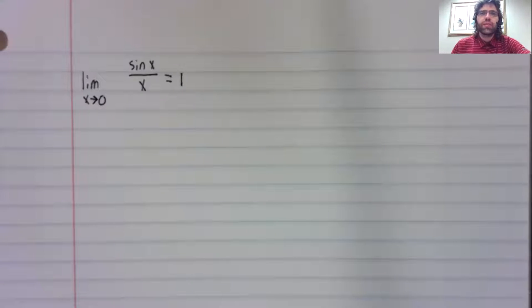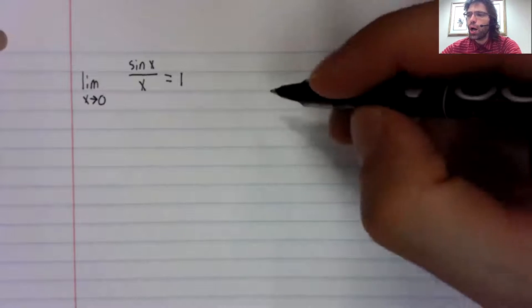There is a classic limit that you should know. Because of the way I'm presenting this material, I'm not showing any proofs. This doesn't really have anything to do with one-sided limits. It's a two-sided limit that I'm going to give you: the limit as x approaches zero of sine of x divided by x equals one.